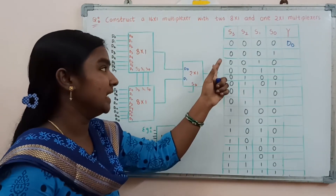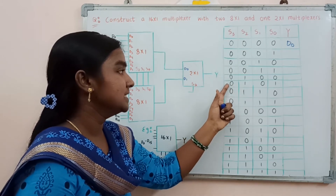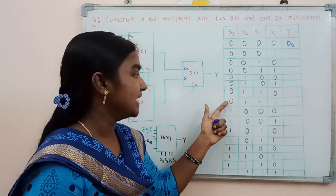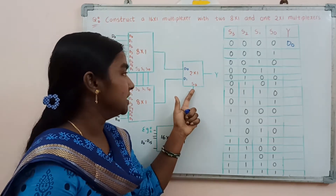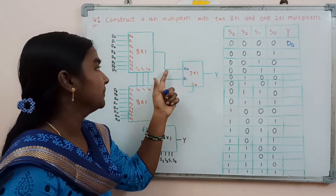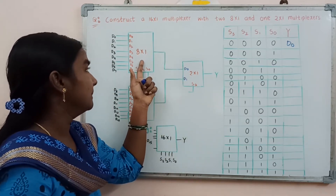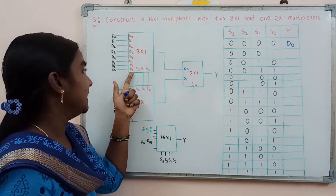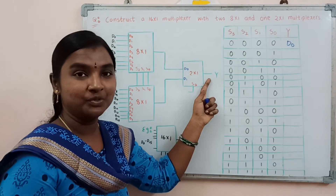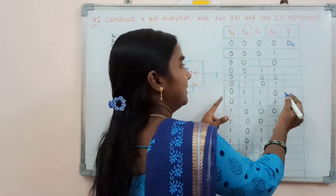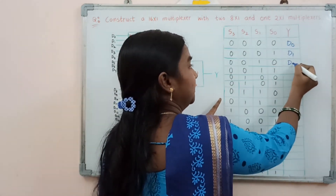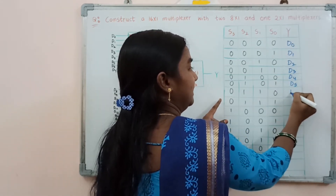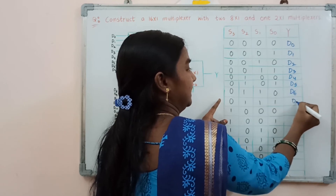Similarly, considering the second, third, fourth, fifth, sixth combinations through D7 — when S3 bit is 0, it selects the upper multiplexer and transmits D7 data to the output. In this manner, D1, D2, D3, D4, D5, D6, and D7 are all selected through the upper multiplexer.